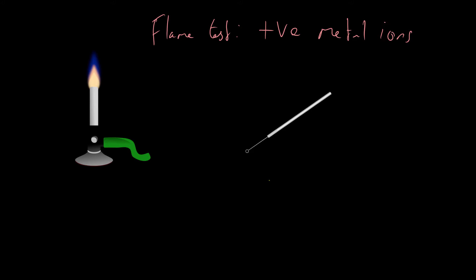What this is here is a nichrome loop. This is where we're going to put the metal ion sample. If you have a metal ion and you don't know what it is, you're going to put it on this loop and then transfer it over to the Bunsen burner to get a result.